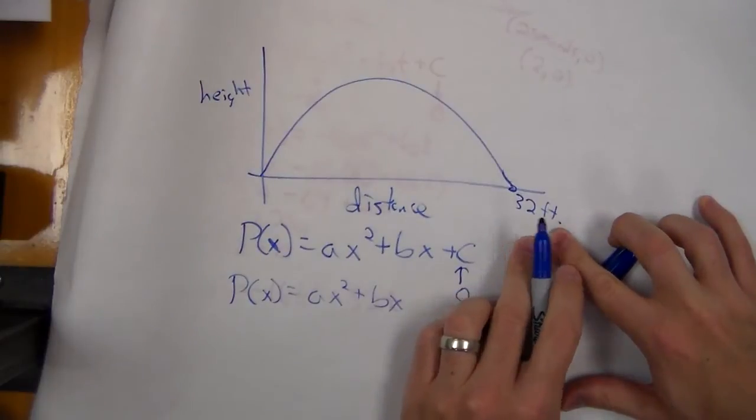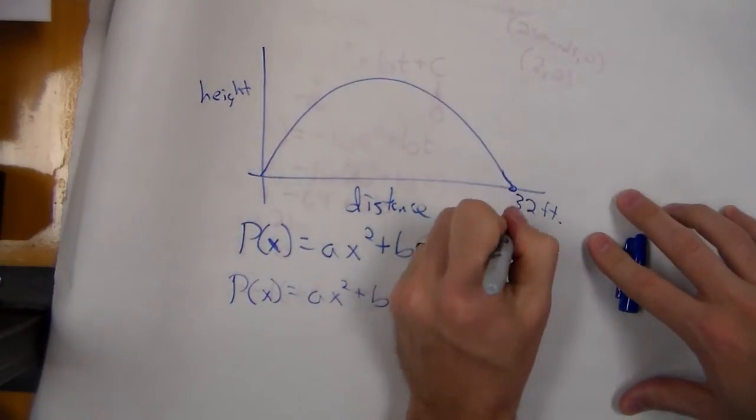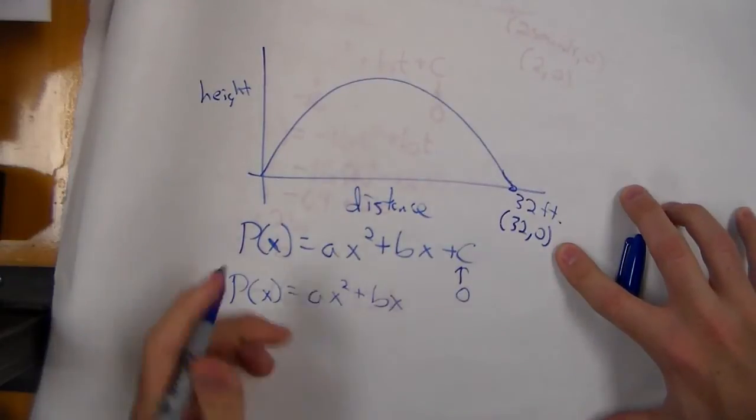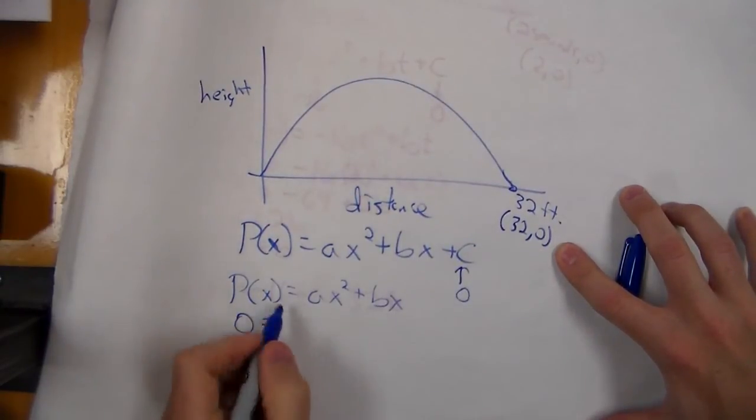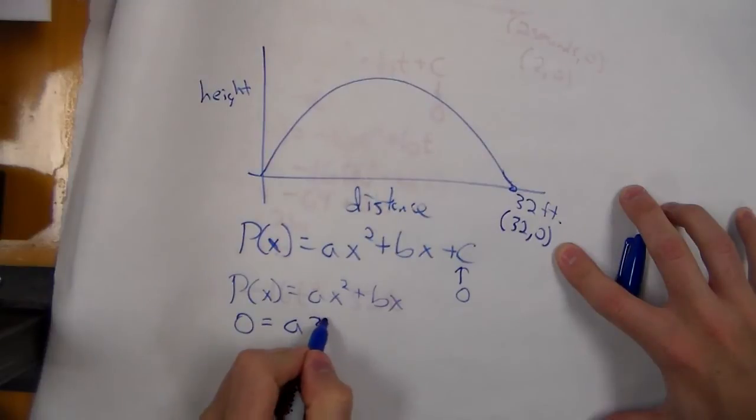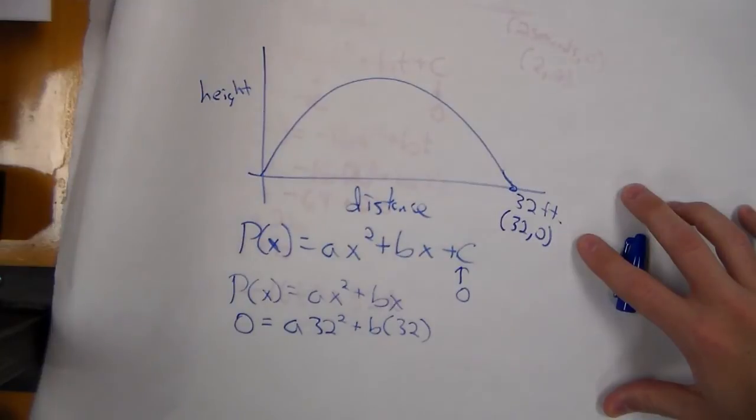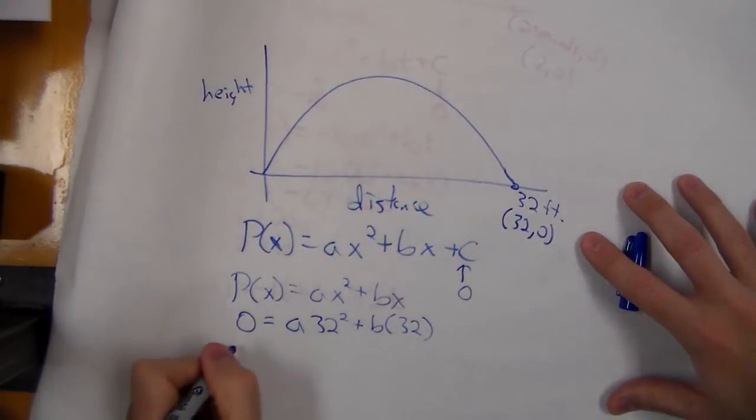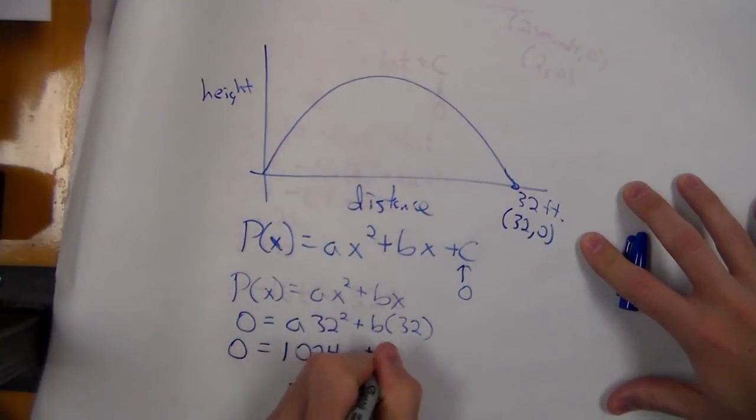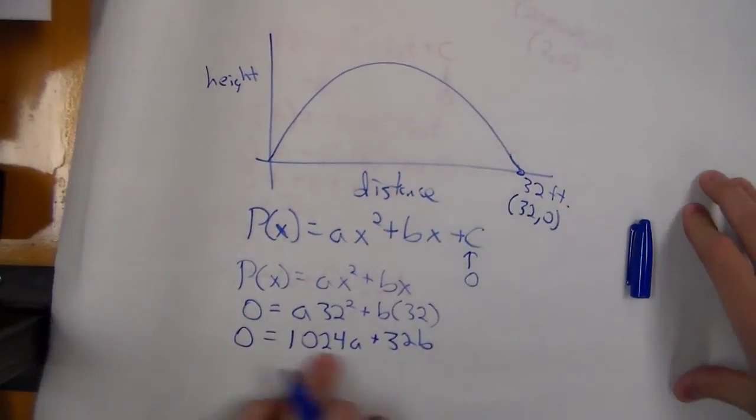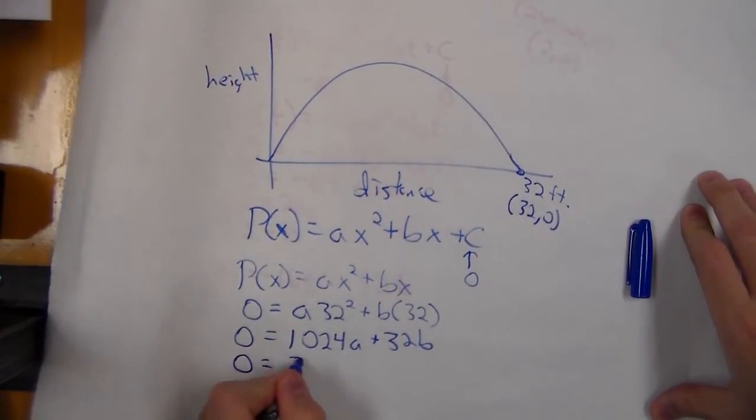We can take 32 and make the coordinate (32,0). Plug this in: 0 = a(32)² + b(32). Thirty-two squared is 1024, so 1024a + 32b. If we divide everything by 32, it comes out to be 0 = 32a + b, or b = -32a. So I can write the relationship, but I still need to figure out what a and b are.